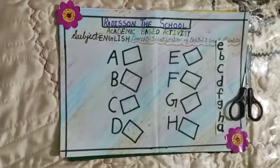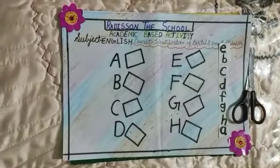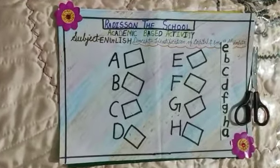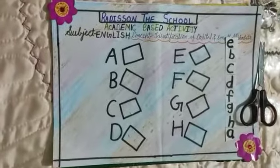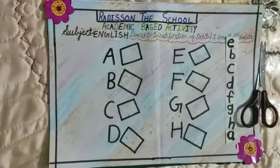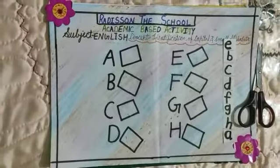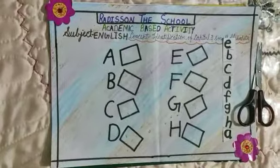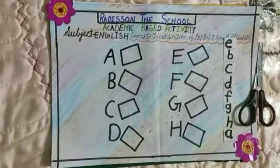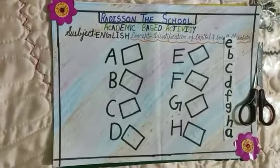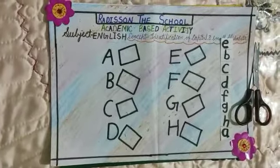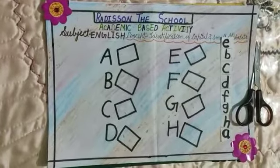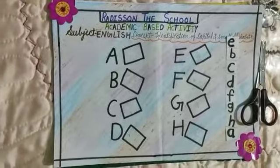Good evening all of you. You are welcome in Radiation Route online classes from Radiation School. I am Abha Jain on behalf of LKG. This is your academic-based activity, subject English — concept: identification of capital and small alphabets.